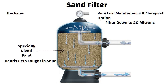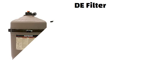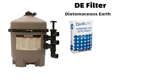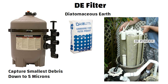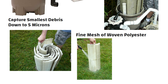A sand filter needs to be backwashed and rinsed regularly every one to two months depending on pool use. DE filter. The full form of DE is diatomaceous earth. DE filters use a special clay-like powder to filter out even the tiniest debris and can capture particles down to 5 microns. The DE powder is sprayed over a grid covered in a fine mesh of woven polyester or similar material. As the water flows through, impurities are caught in the DE powder.